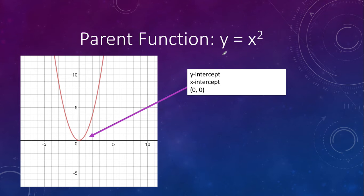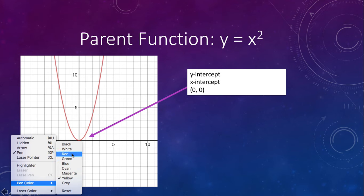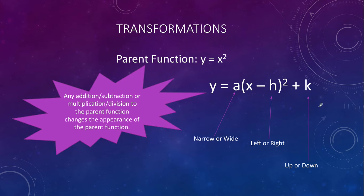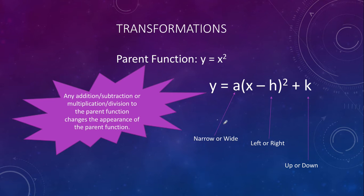Here again is the parent function. Zero is the x-intercept, the y-intercept, the vertex, the minimum, the axis of symmetry — all that great stuff. When we change the equation, it affects the parent function. Here's a quick snapshot: any addition, subtraction, multiplication, or division to the parent function changes its appearance. The a value tells us how narrow or wide our parabola looks, and if it's concave up or concave down. The h value tells us left or right movement. The k value tells us whether the parabola moves up or down.